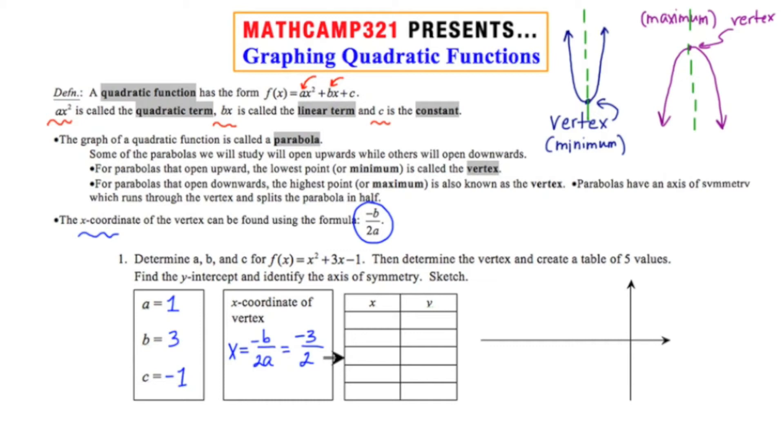Now, we're asked to construct a table of five values for our parabola. Well, what I'm going to do is I'm going to put the x coordinate of the vertex right in the middle. And what I'm going to do is I'm going to find the integers that fall below negative 3 halves, and that fall immediately above negative 3 halves. So right below negative 1.5 would be negative 2, followed by negative 3. And right above negative 1.5 would be negative 1 and 0.